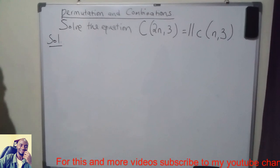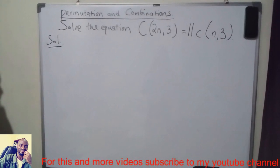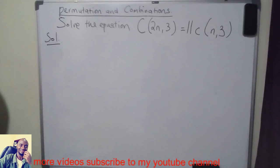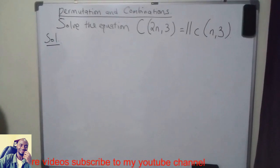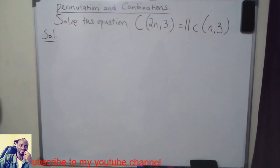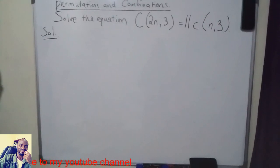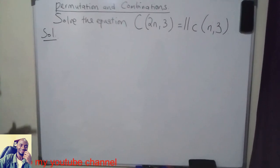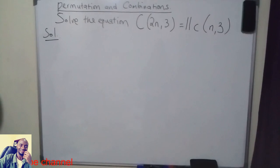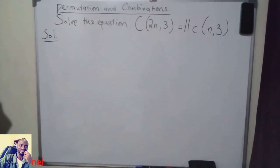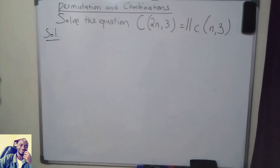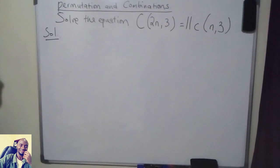So if you are given such an equation, before we go to the solving, a combination is a selection of items where the order is not important. So the first thing that you need to do is to know how you define a combination.